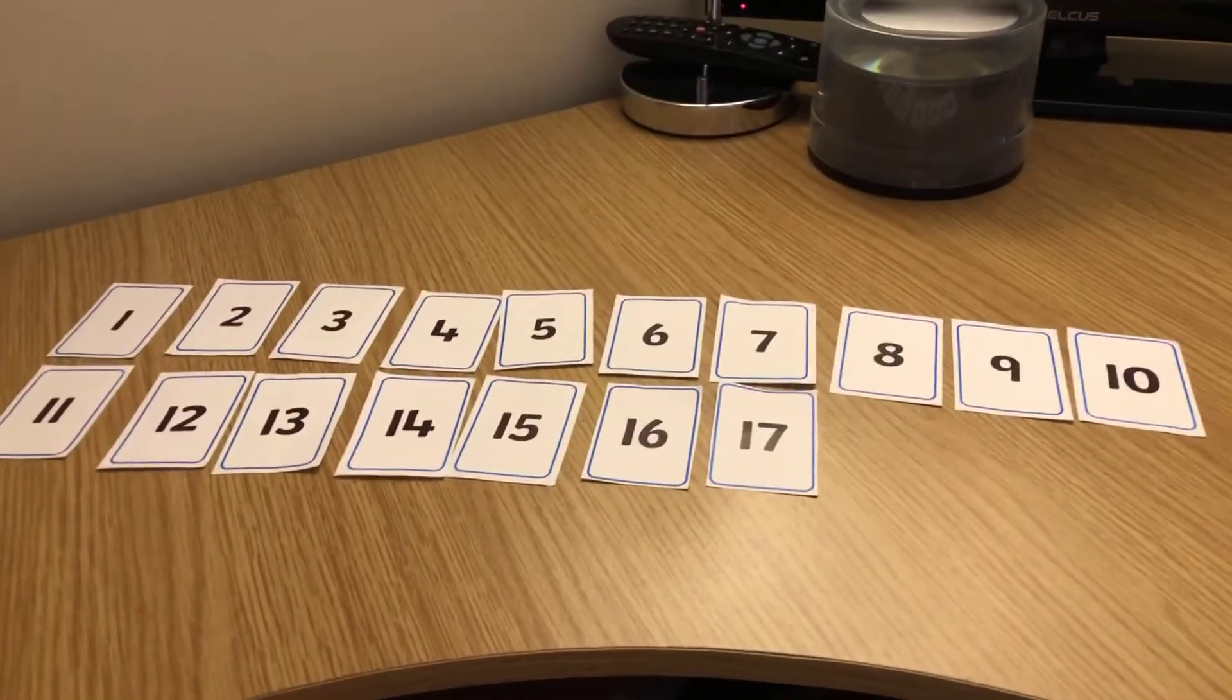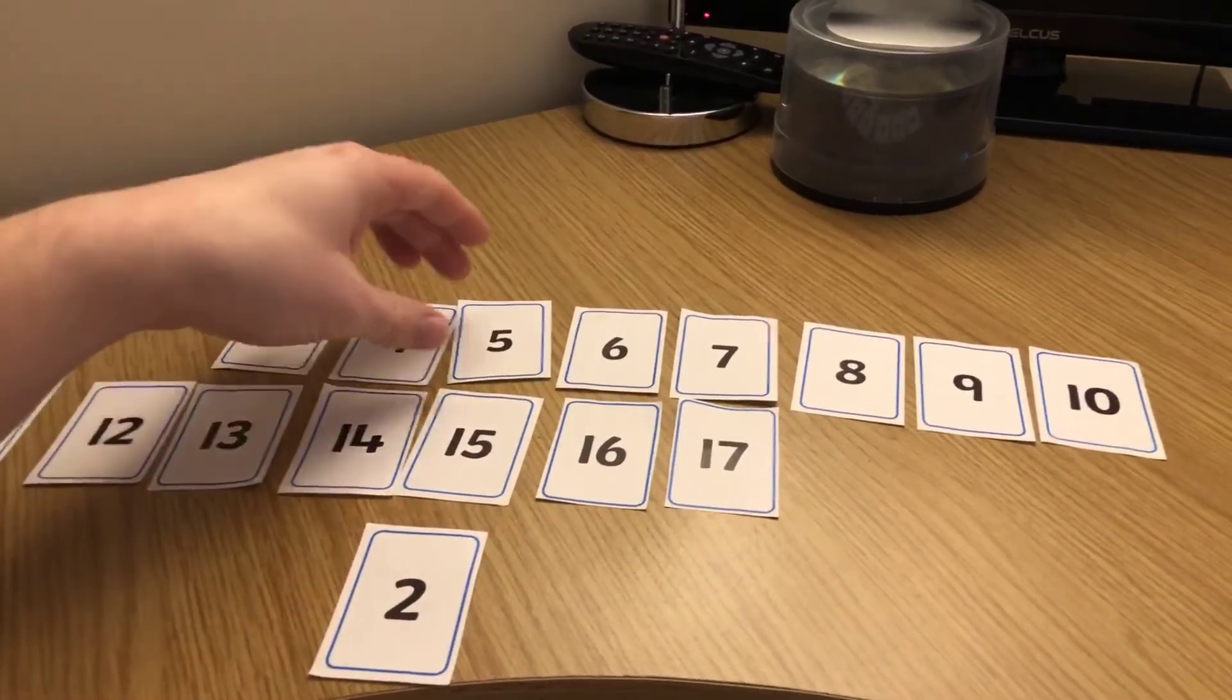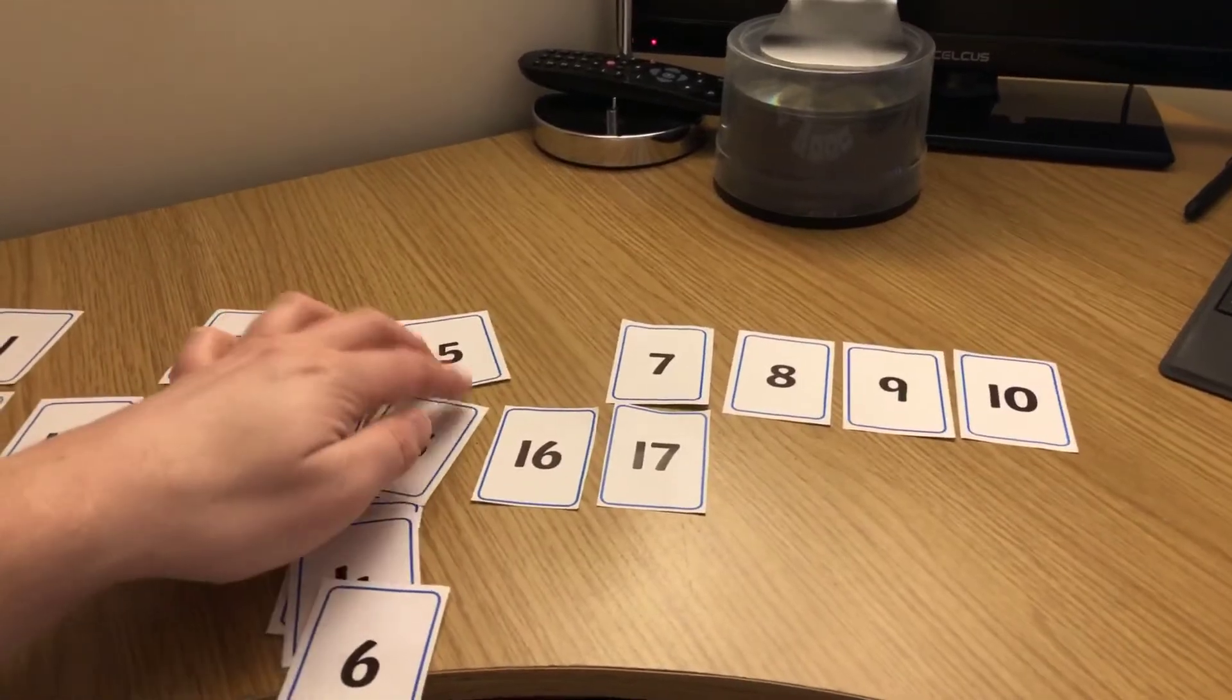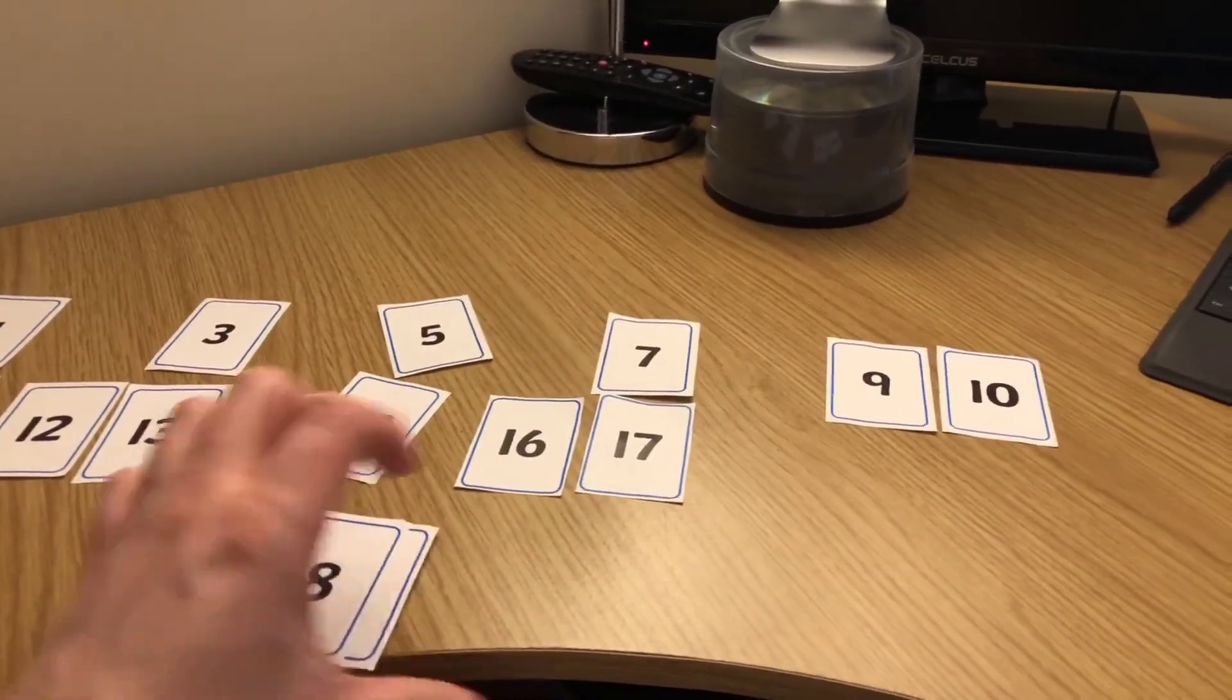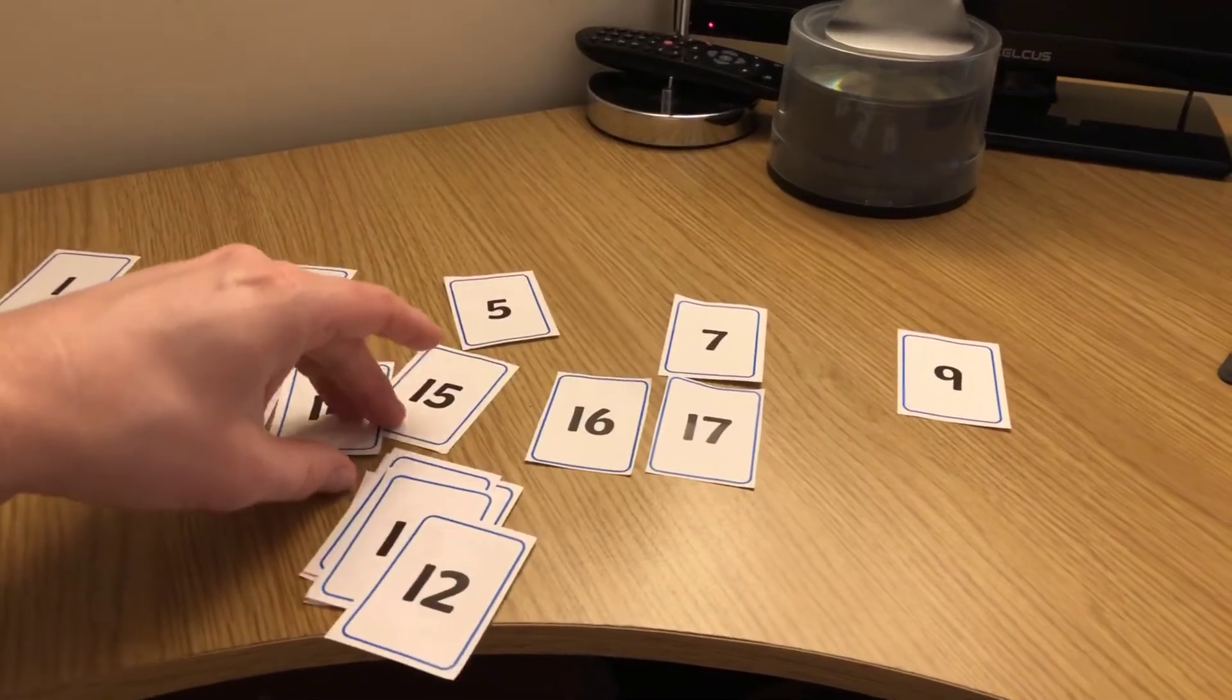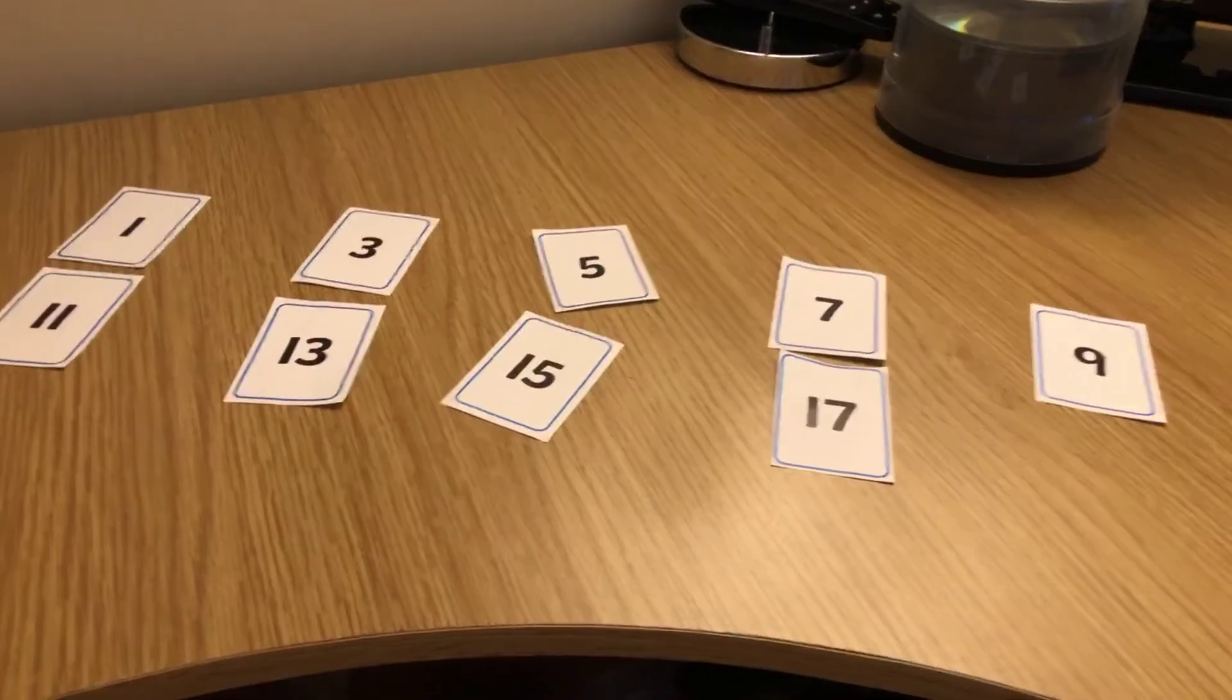Right, now to finish off then to put these away. What we're going to do is we're going to collect the even numbers first in order. So follow me. So we're going to go two. What's next one? Four. What's next one? Six. See, we're missing one out each time. So what's the next one going to be? Eight. Two, four, six, eight. What's next? Ten. Miss one out. Twelve. Miss one out. Fourteen. Miss one out. Sixteen.